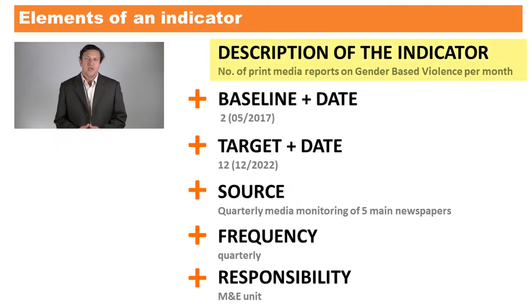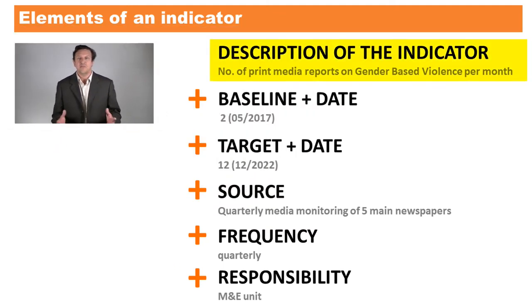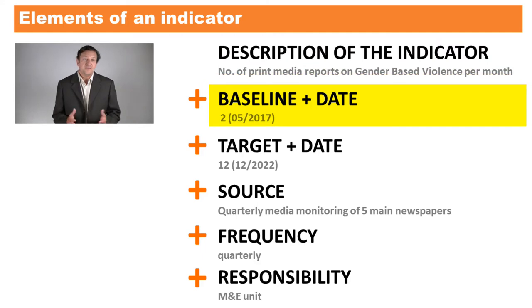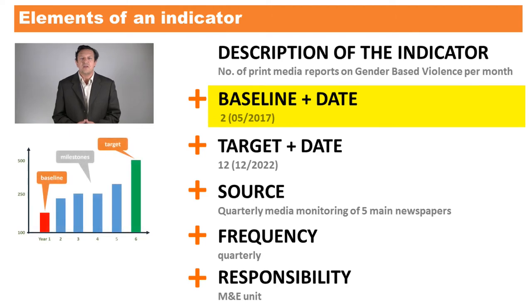While there is no single standard for how an indicator should be written down, this example shows an effective and concise way to do that. We see that this indicator consists of six elements. The first is a description of the indicator — for example, the number of print media reports on gender-based violence per month. The second is an indicator baseline and the date the data was collected. The baseline is the status of the indicator at the beginning of a program or project and acts as a reference point against which progress or achievements can be assessed.